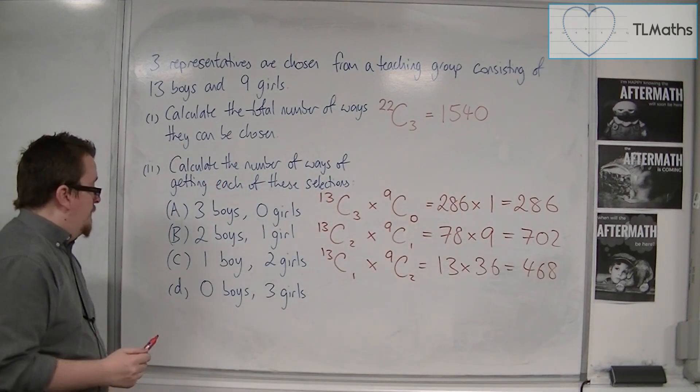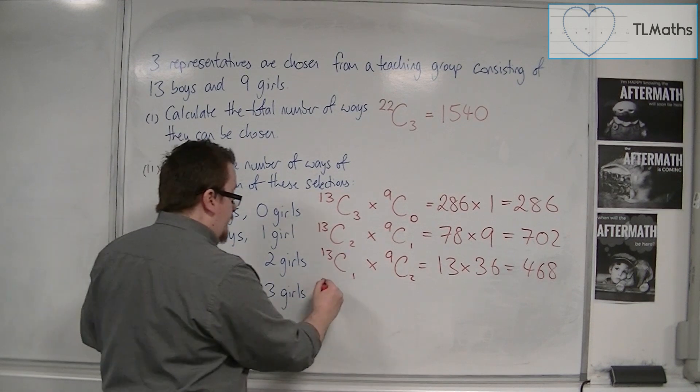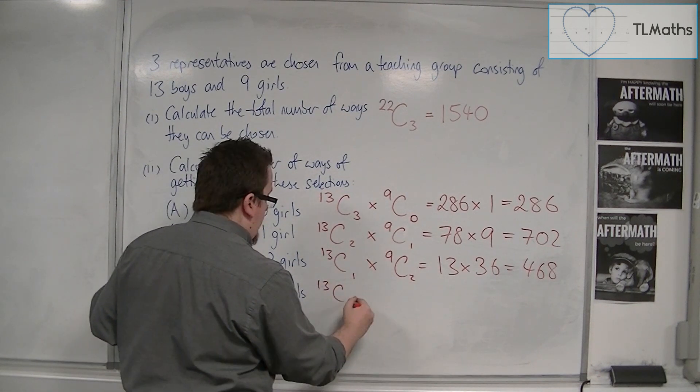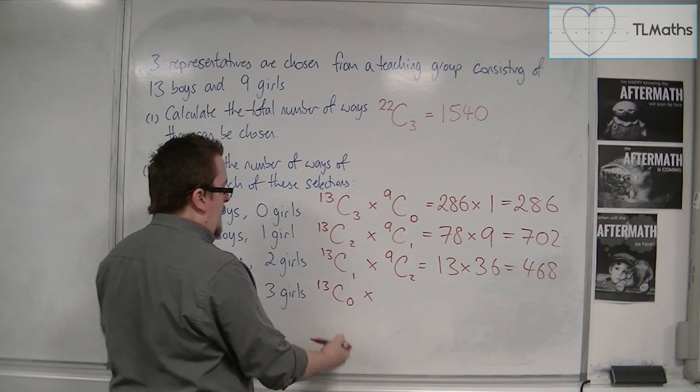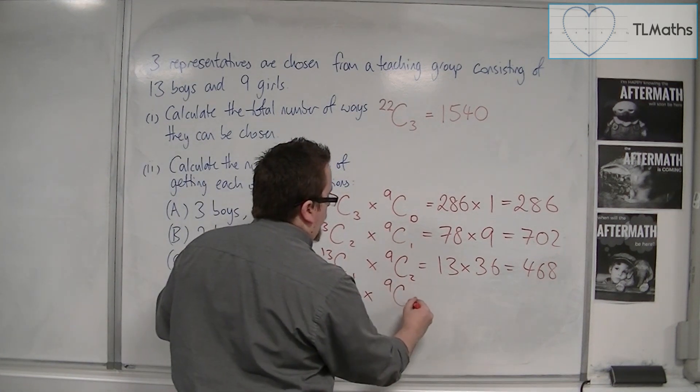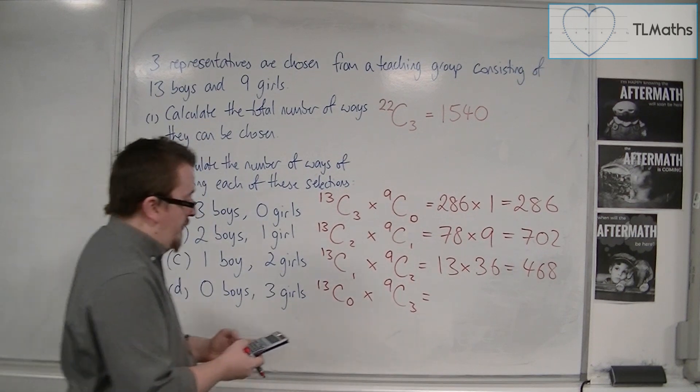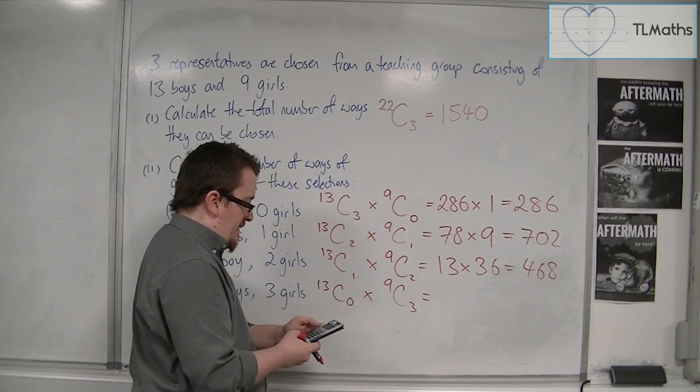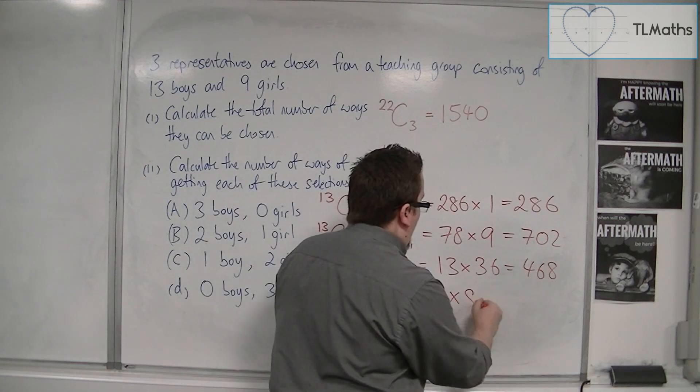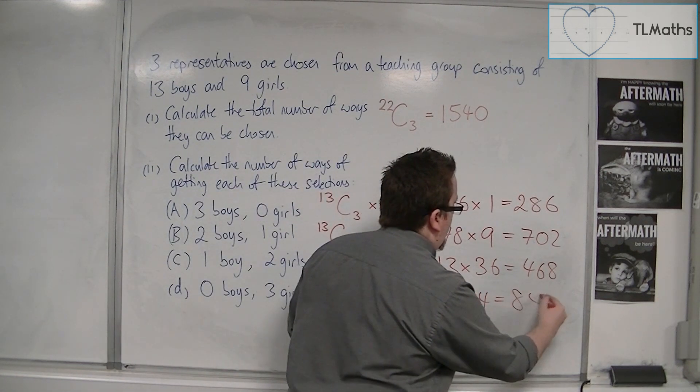And then finally we have 0 boys. So 13 NCR 0, which I know is going to be 1, and out of the nine girls choose 3. So we have 1 times 9 NCR 3. 1 times 84, which is 84.